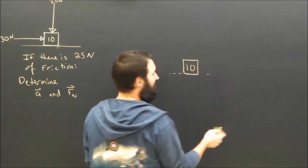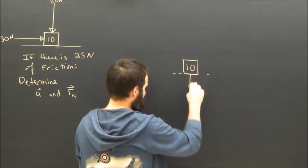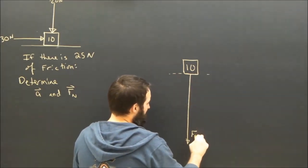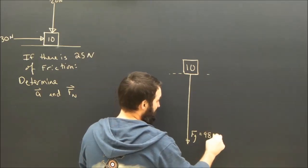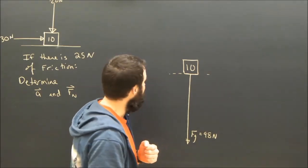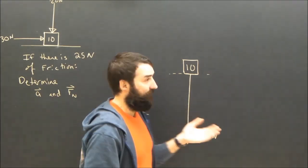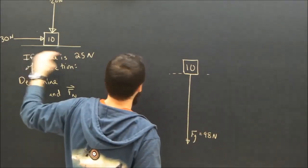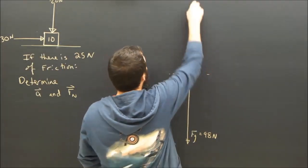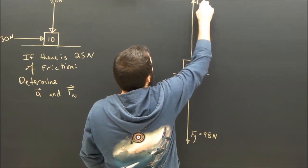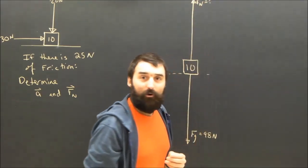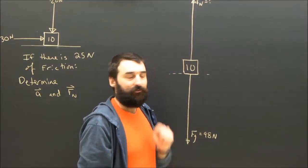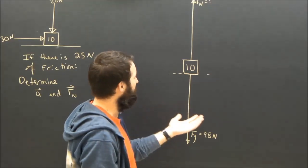So we have a 10 kilogram object. Is there gravity on it? Yeah, of course. And it's down and it's equal to mg, which I happen to be able to do in my head, is 98 newtons. What other forces are there? This thing is on a surface, it's on the ground, so there's going to be a normal force. I don't know how big it is, so I'll leave it as a question mark.